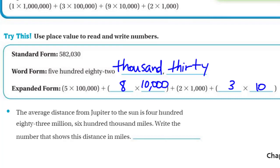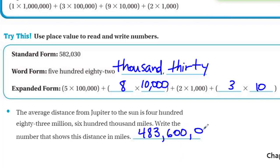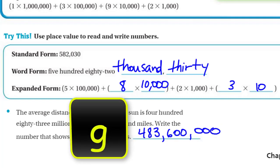The average distance from Jupiter to the sun is four hundred eighty-three million, six hundred thousand miles. It says write the number that shows this distance — in standard form. So four hundred eighty-three million: that million tells me to put a comma. And six hundred thousand miles — six hundred thousand — then I put three zeros. Four hundred eighty-three million, six hundred thousand miles.